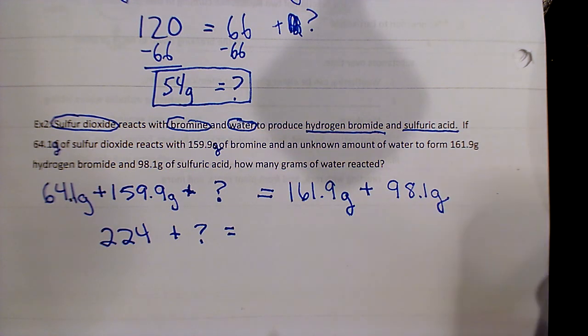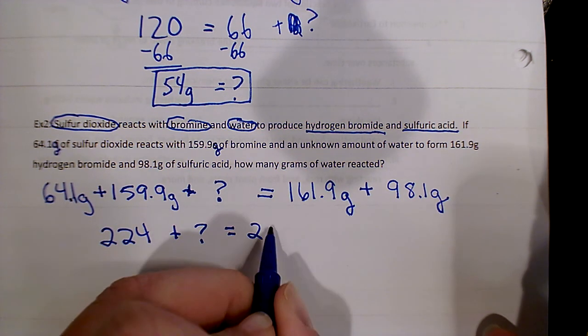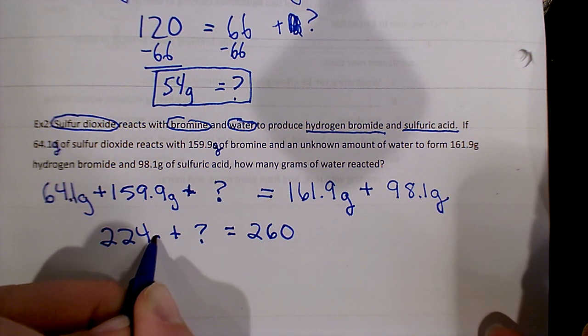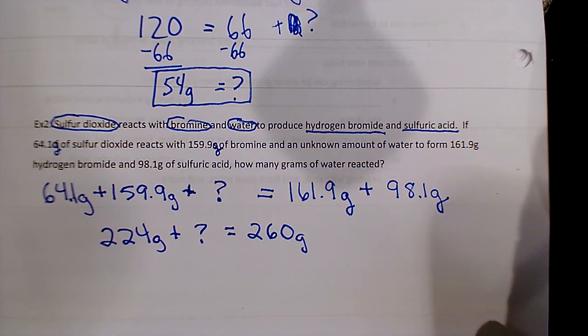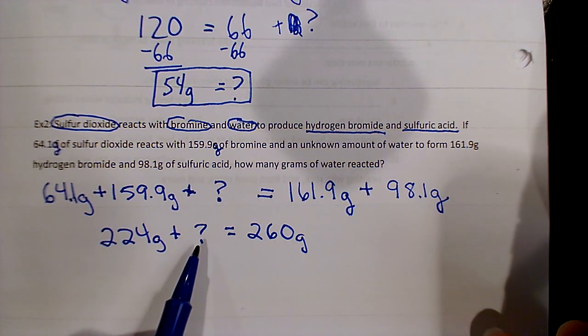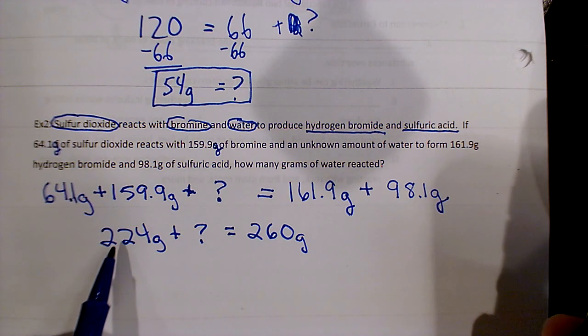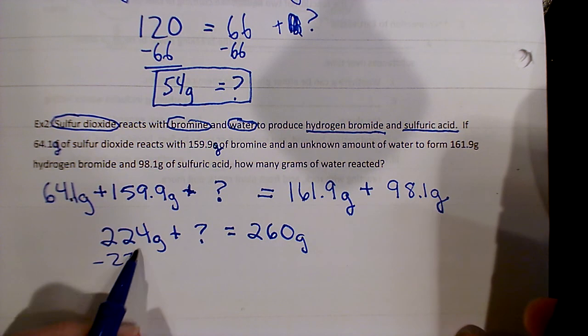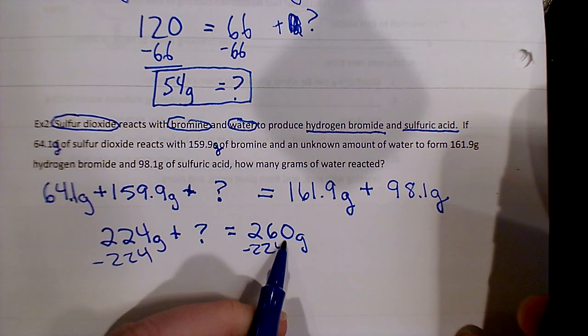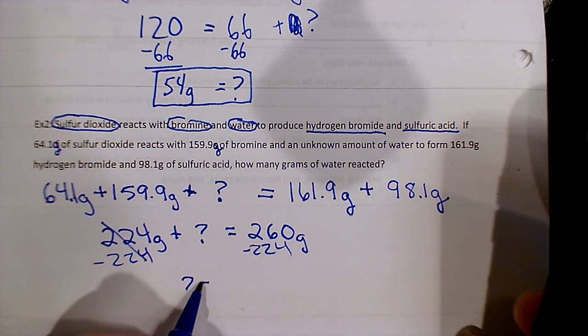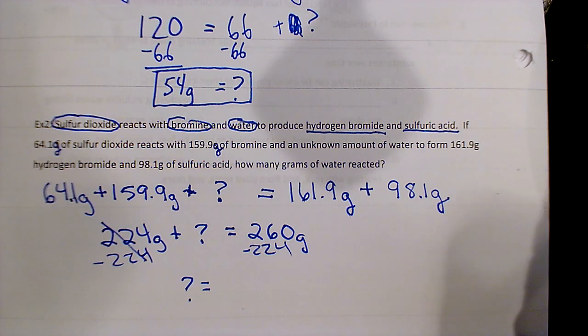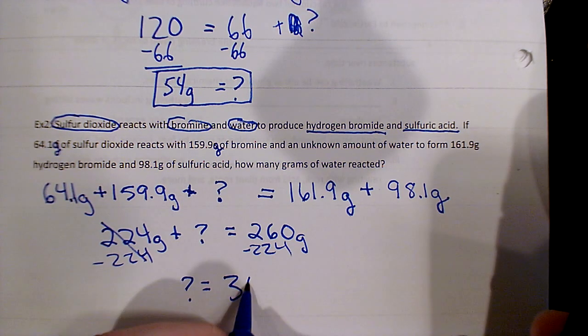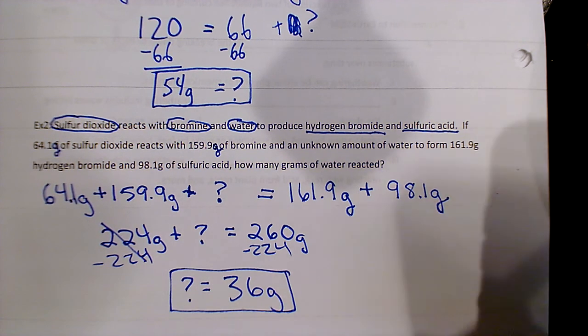So now here's my unknown. Trying to solve for my unknown. My unknown is plus 224. So to get my unknown alone, I have to do the opposite. I'm going to subtract 224. So I have 260 minus 224. Looks like 36 grams to me.